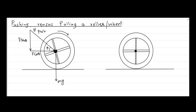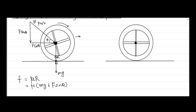F cos theta is acting in the direction of motion of the wheel, so it helps the wheel go forward. Whereas F sin theta is acting in the downward direction, so it increases the normal reaction. Mg and F sin theta both act downward, giving rise to the normal reaction R at the interface between the wheel and the road. Since frictional force equals mu times normal reaction, in this case the frictional force is mu times (Mg plus F sin theta).